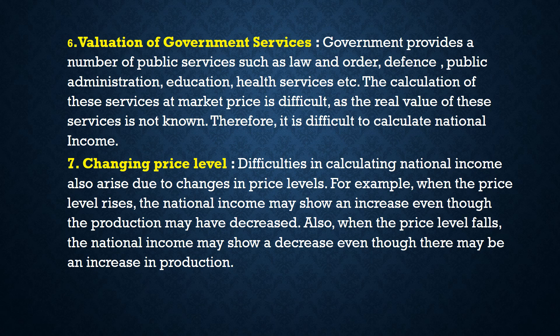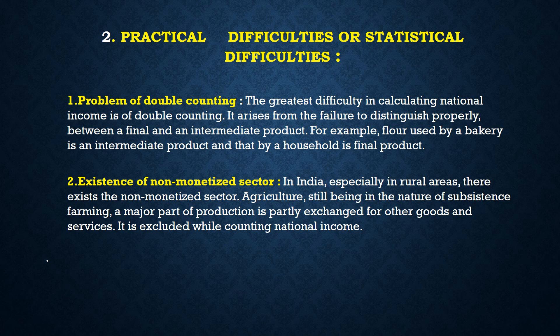Now we move to the practical, or statistical, difficulties. Number 1: problem of double counting. For example, while calculating the value of a shirt, we should not include the value of thread or cotton separately. But sometimes we include the value of cotton, thread, and shirt all together, creating a problem of double counting. The greatest difficulty in calculating national income is double counting, which arises from the failure to distinguish properly between final goods and intermediate products.